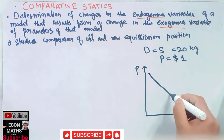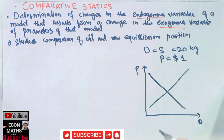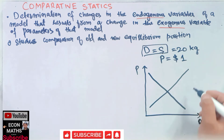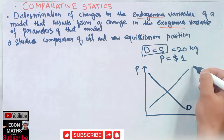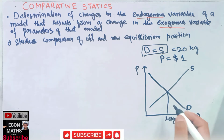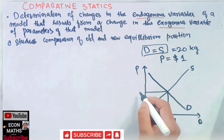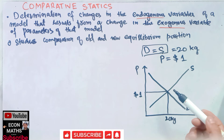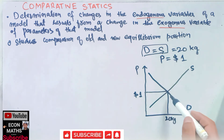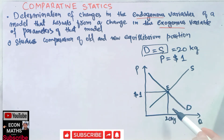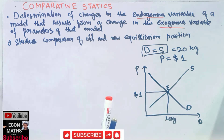Let's draw a graph with quantity of onions on one axis and price of onions on the other. We have a demand function and a supply function. Where demand equals supply — that is the equilibrium position, point E — we demand 20 kg of onions at an equilibrium price of one dollar.